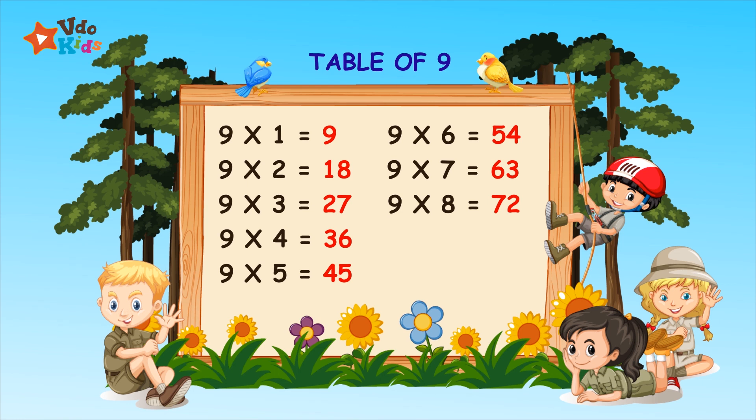9 eights are 72. 9 nines are 81. 9 tens are 90.